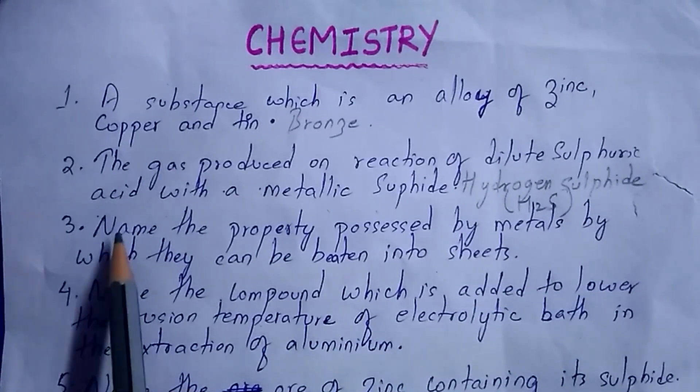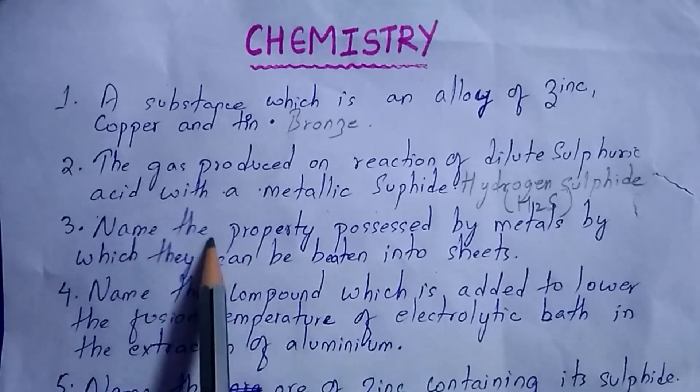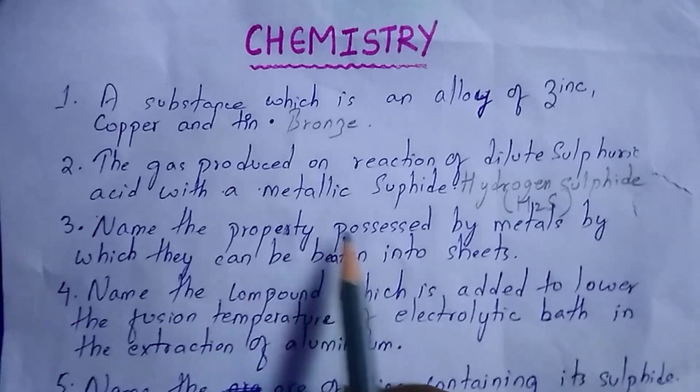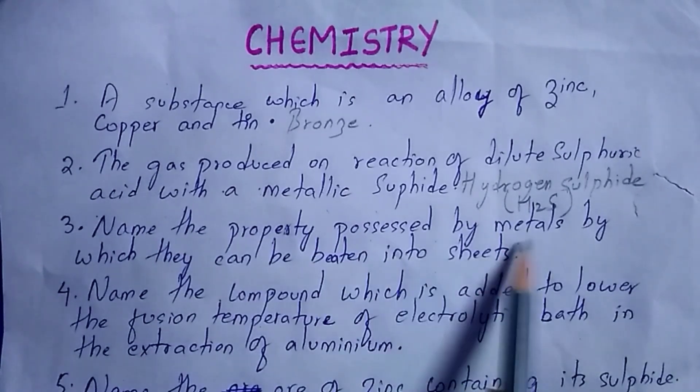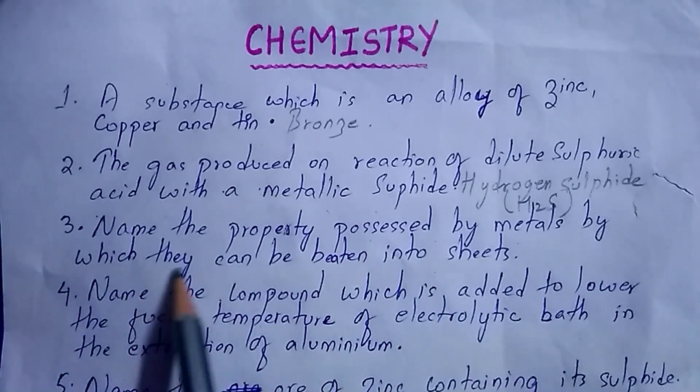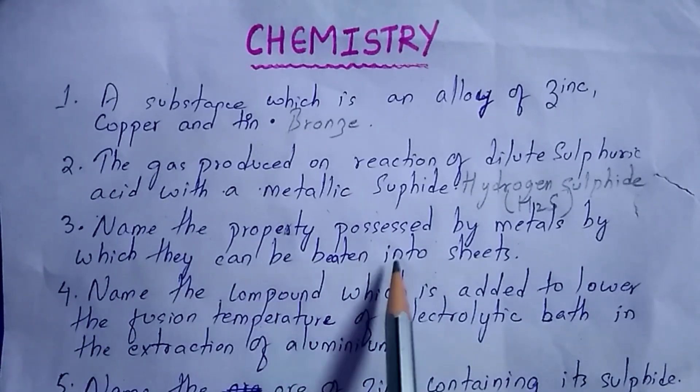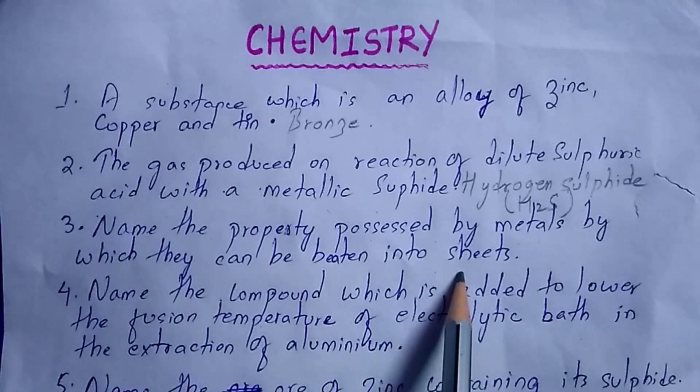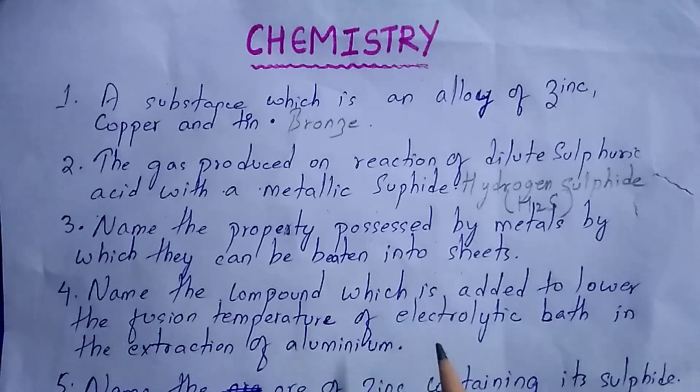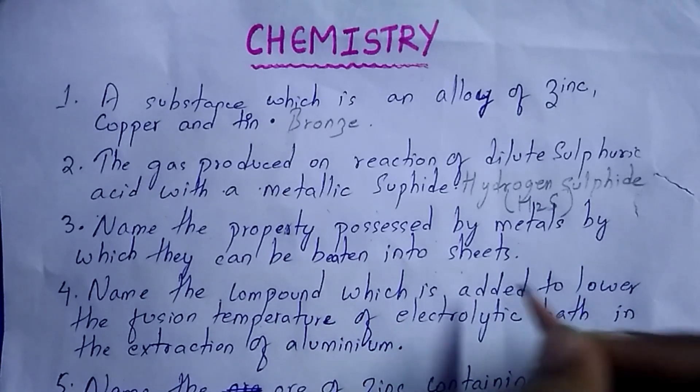Next question: name the property possessed by metals by which they can be beaten into sheets — it is malleability.